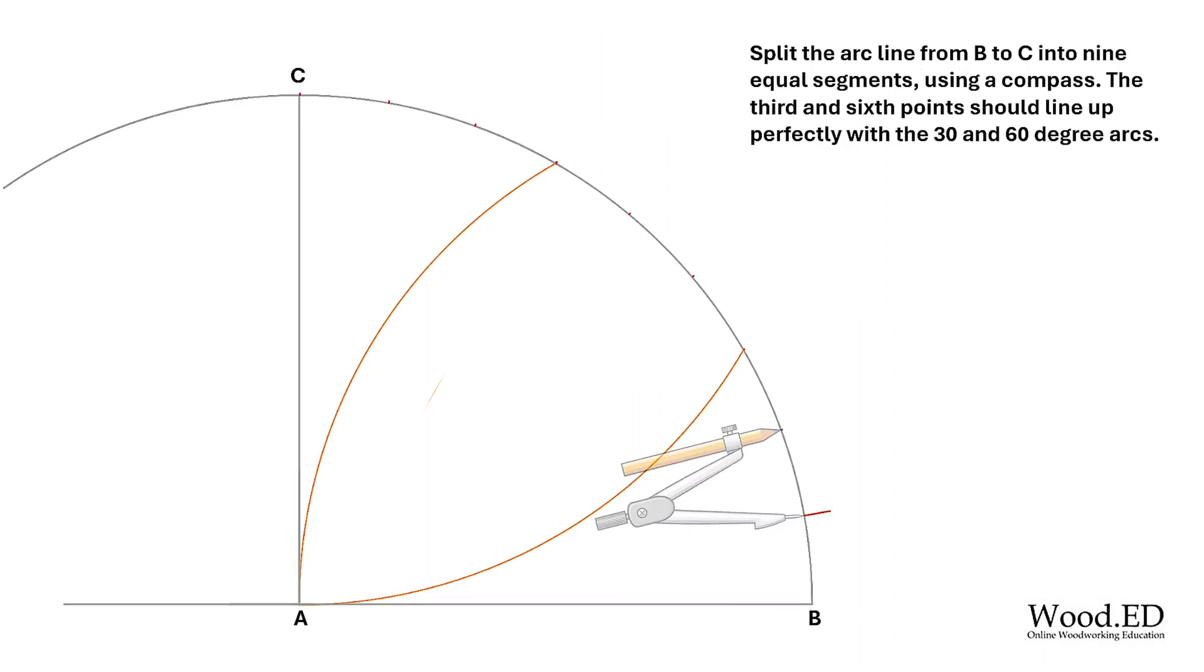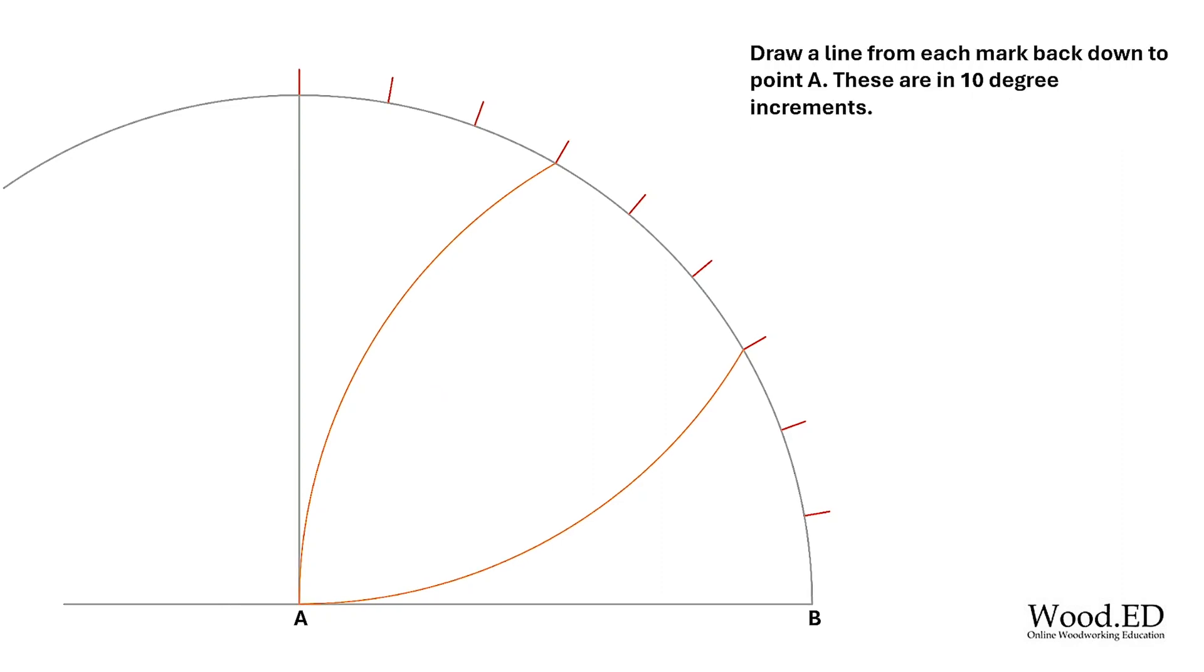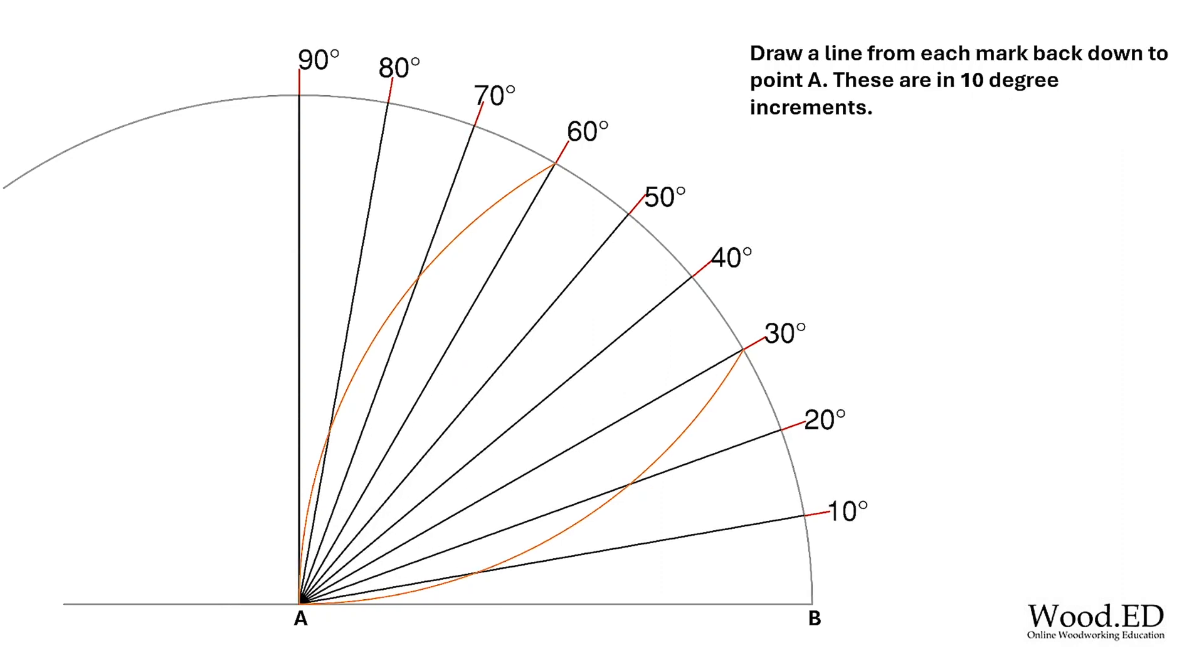We're then going to equally split the arc line B to C up in nine equal segments, and the third and the sixth point should intersect the 60 and the 30 degree lines perfectly. So just make sure they do. Draw lines from each one of those segments down to point A and that's going to be the 10 degree increments.